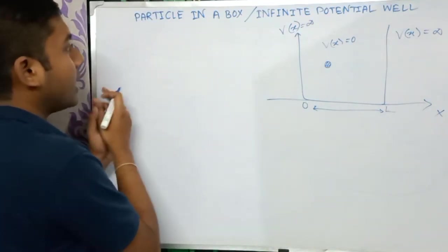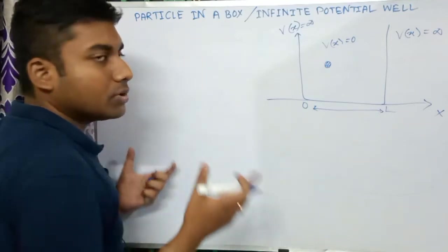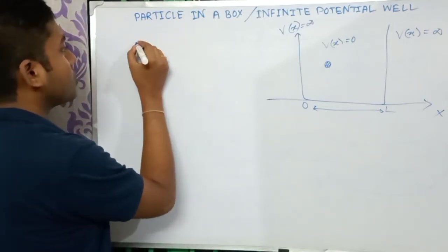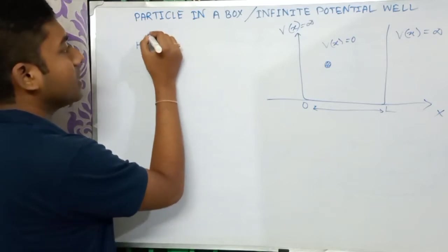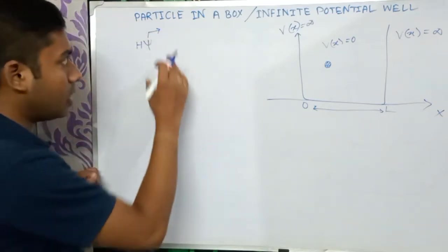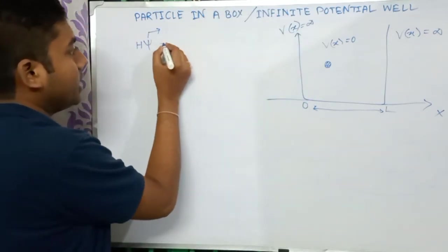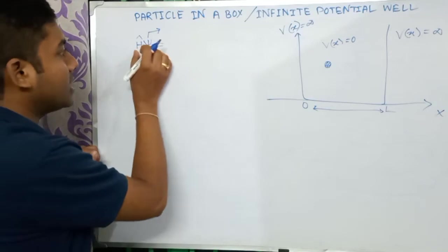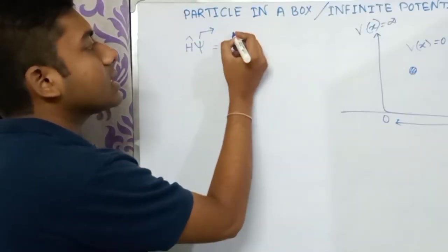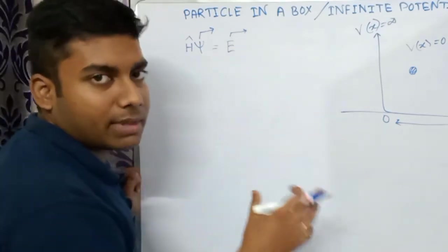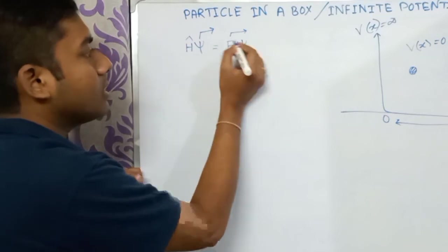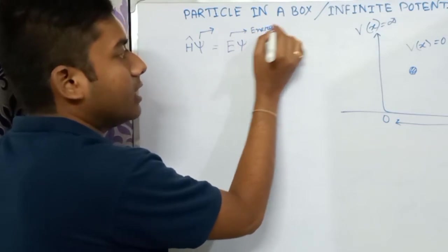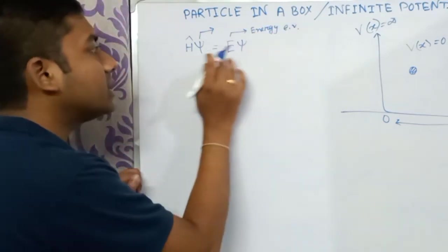The actual equation is the eigenvalue equation, which you may have encountered in mathematical physics as eigenvalue problems. H-hat psi is the eigenfunction, or in quantum mechanics it is called the wave function. H-hat psi equals E psi, where H-hat is the Hamiltonian operator and E is the energy eigenvalue — what in mathematical physics we call the eigenvalue.